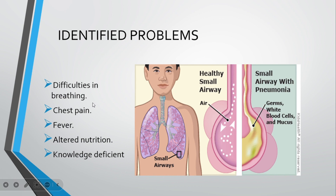When inflammation causes fluid accumulation in the alveoli, it leads to the problems a patient will have. The first problem is difficulty in breathing, which can be manifested as ineffective breathing patterns or reduced oxygen saturation. The second is chest pain, the third is fever, the fourth is altered nutrition, and the fifth is knowledge deficit.